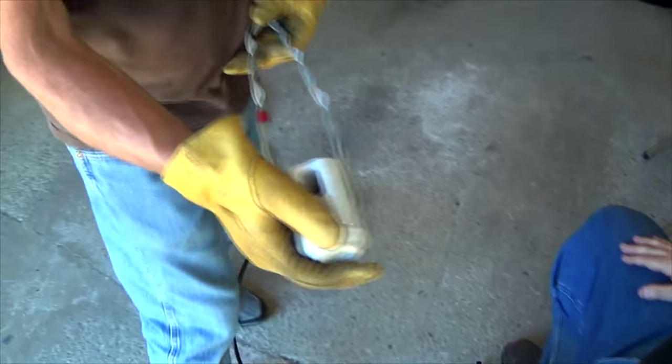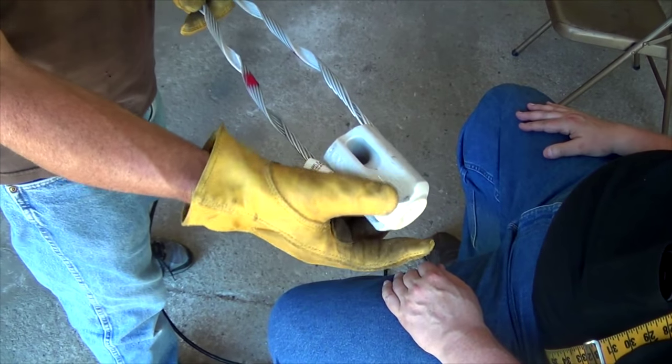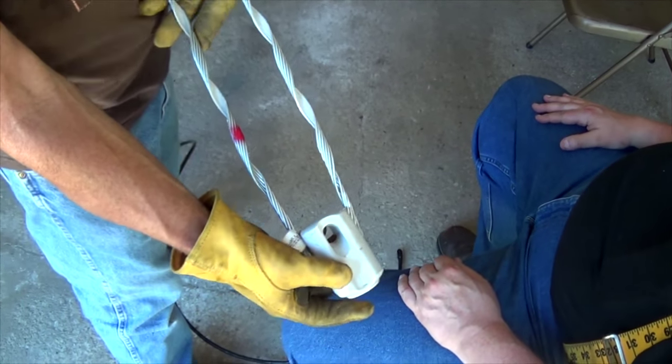We're going to install a preform grip on 6700 Philly strand on a 502 insulator. This is going to be the way it hangs.